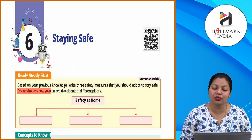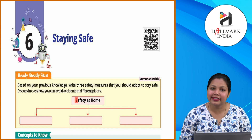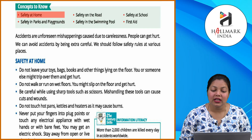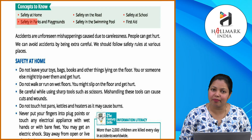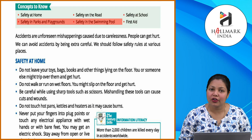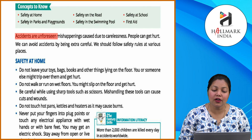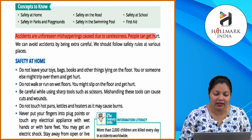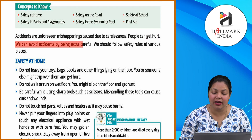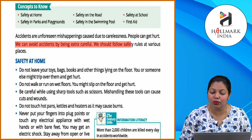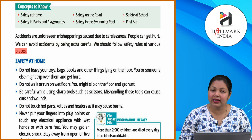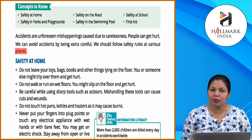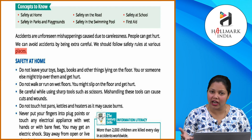Discuss in class how you can avoid accidents at different places. Key concepts to know: safety at home, safety on the road, safety at school, safety in parks and playgrounds, safety in the swimming pool, and first aid. Accidents are unforeseen mishappenings caused due to carelessness. People can get hurt. We can avoid accidents by being extra careful. We should follow safety rules at various places.